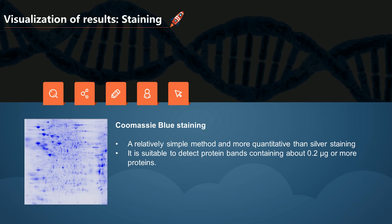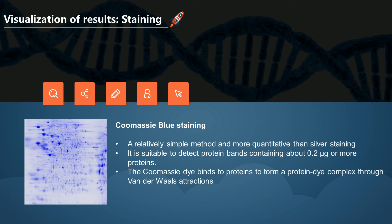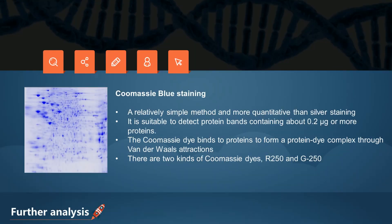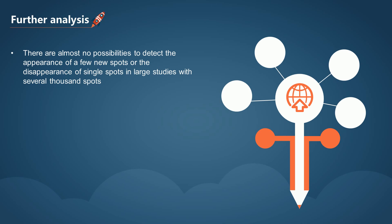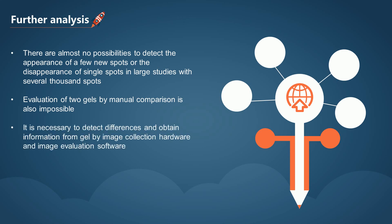There are almost no possibilities to detect the appearance of a few new spots or the disappearance of single spots in large studies with several thousand spots. In addition, evaluation of two gels by manual comparison is also impossible. Therefore, it is necessary to detect differences and obtain information from gels by image collection hardware and image evaluation software. There is some suitable analysis software, such as Melanie, and the gels can be used for the identification and other applications by mass spectrometry.